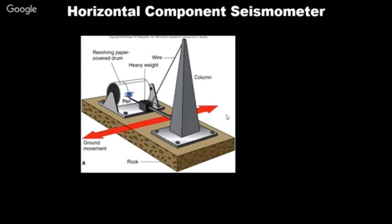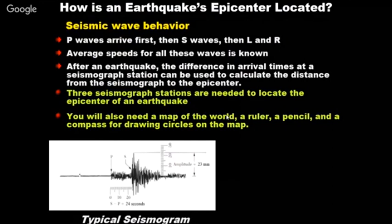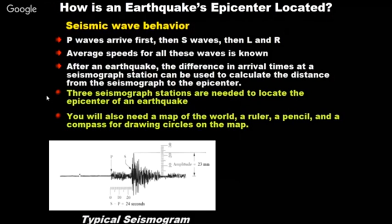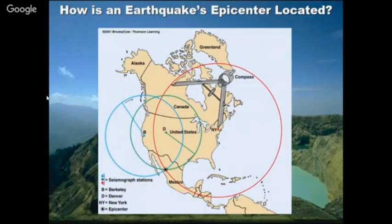To locate the epicenter, we use the time difference between P waves and S waves. P waves arrive first, followed by S waves. If the time difference is 24 seconds, using the Richter scale nomogram, the distance is approximately 215 km from the recording station. To find the epicenter, we need readings from at least three stations and draw circles of corresponding radii on a map — where the three circles intersect is the epicenter.